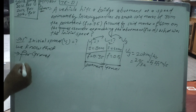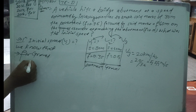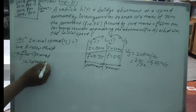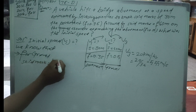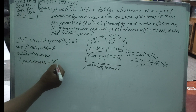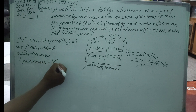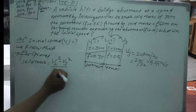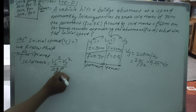We are going to apply the skid mark formula. The skid mark distance equals V2 squared minus V3 squared, divided by 2 times G times F.